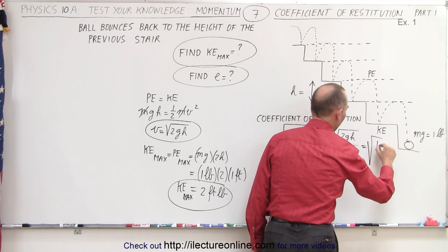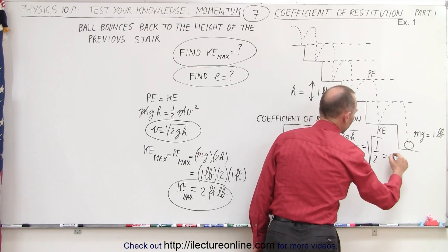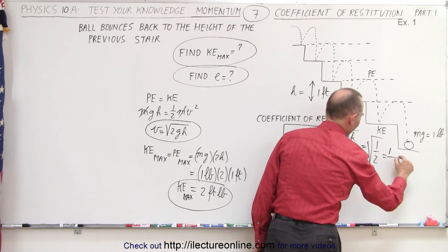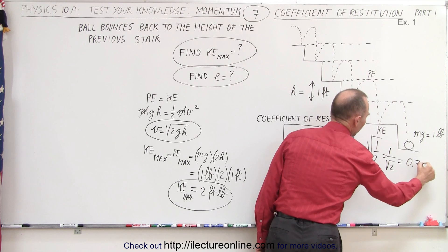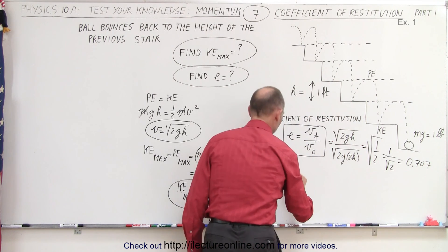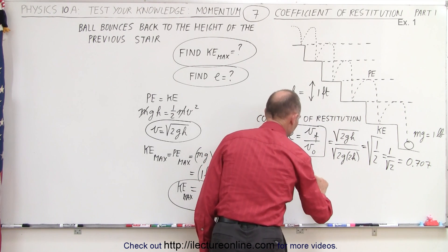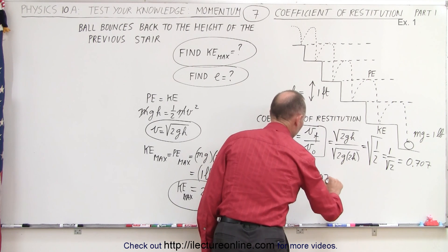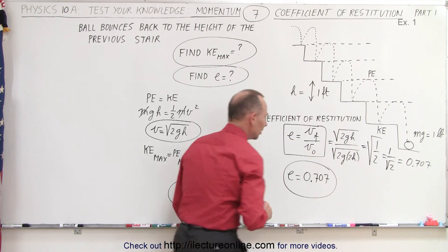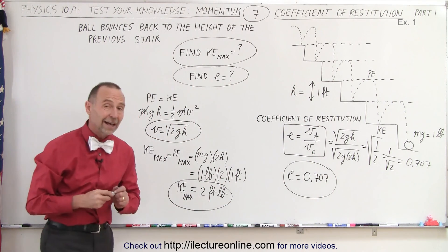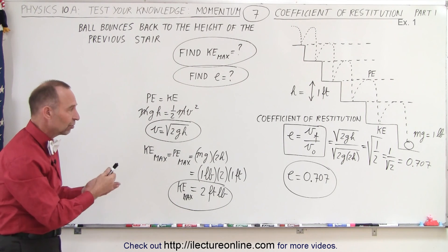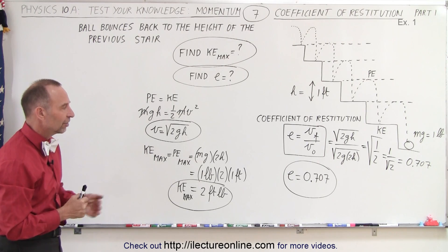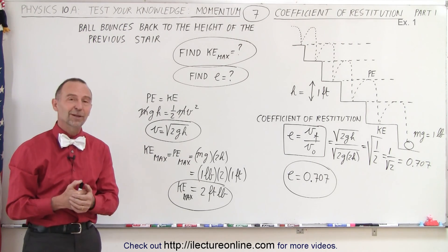Notice that the 2gh cancel out, so this is equal to the square root of 1 over 2, or the square root of 1 divided by the square root of 2, which is equal to 0.707. In other words, the coefficient of restitution is simply 0.707, and that's based on the original height compared to the final height, and then using that to find the original velocity and the final velocity. And that is how it's done.